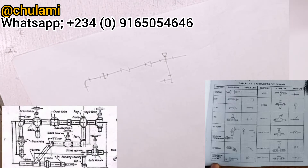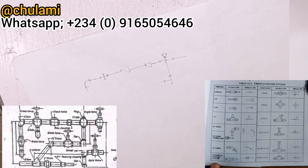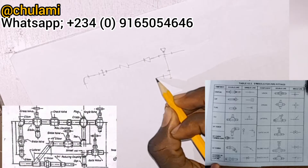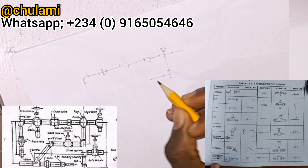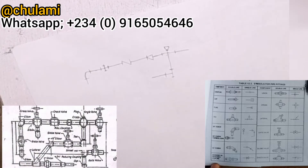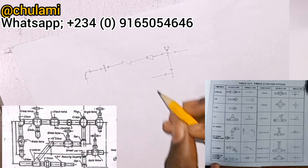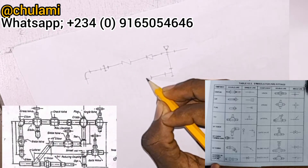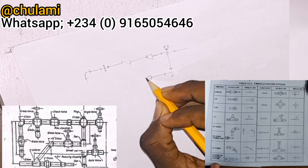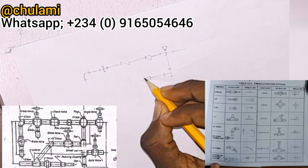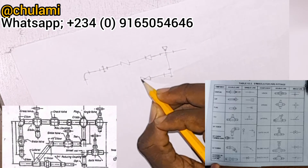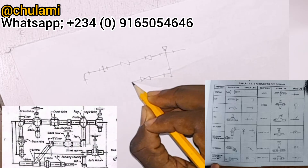After the T-joint connection, you have a globe valve. The symbol for a globe valve is drawn something like this.